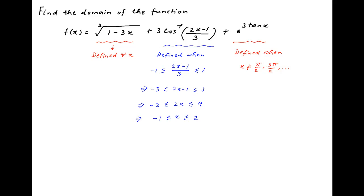Now we plot these three conditions on the number line. The first condition does not put any limitation on the value of x. The second condition stipulates that x lies in the closed interval ranging from minus 1 to 2. The third condition indicates that x should not be equal to π/2, which is roughly equal to 1.5, should not be equal to 3π/2, which is roughly equal to 4.5, and so on and so forth.